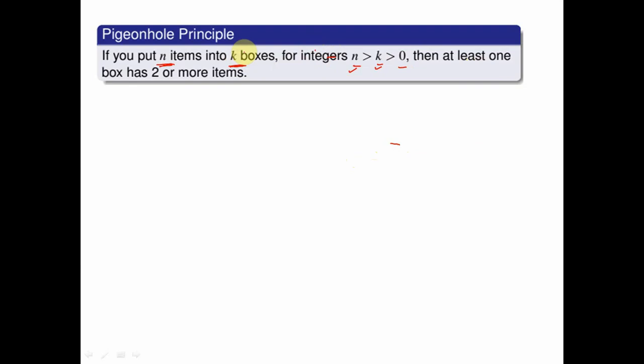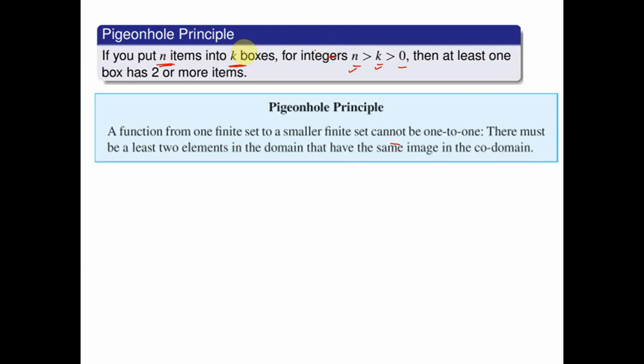We can also define the pigeon hole principle in terms of functions. If we define a function from set A to set B, both finite sets, and the cardinality of A is greater than the cardinality of B, then the function cannot be one-to-one. Multiple elements from set A are bound to be mapped to a single element of set B.